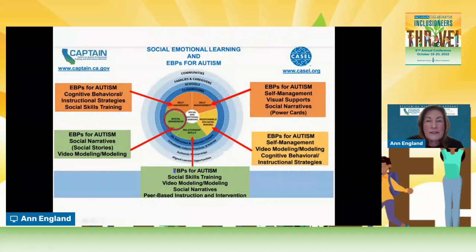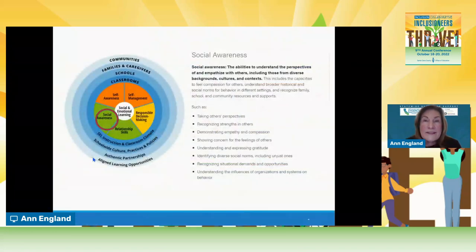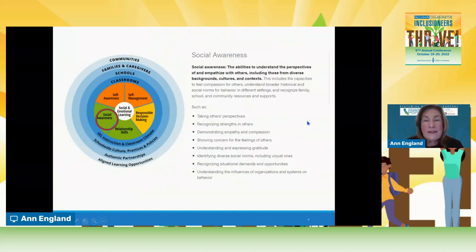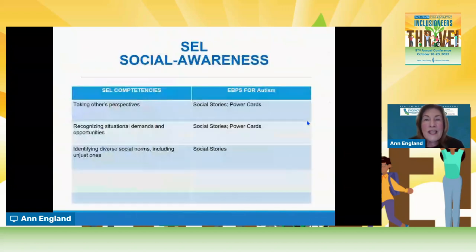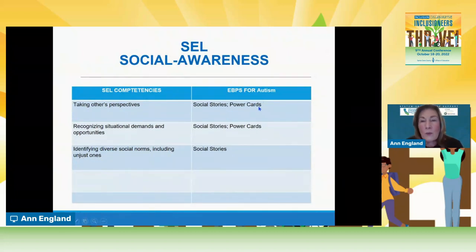Now we're going to move on to social awareness. These are the EBPs for autism that will help with social awareness. However, this is a really challenging area for individuals with autism because it requires taking others' perspectives, recognizing strengths in others, demonstrating empathy and compassion, and showing concern for the feelings of others. This is kind of the hallmark characteristic of an individual with autism. We're not going to fix it or cure it, but we can use evidence-based practices to support them in engaging in all these activities. Social stories and power cards are the evidence-based practices for autism that would be very helpful.